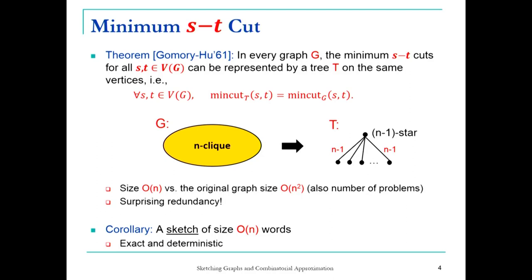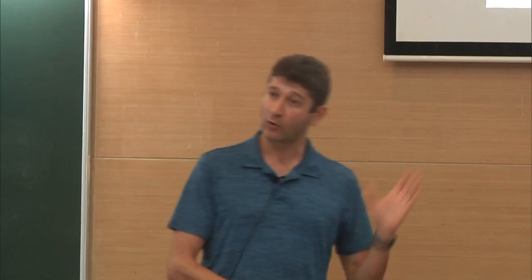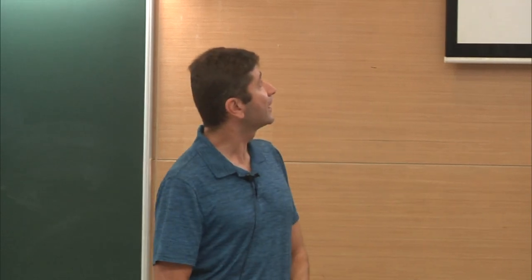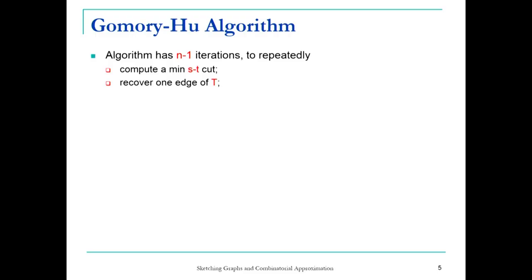For me, this is a good sketch — a good summary of the data using only order n words, and it gives you the exact value, the exact equality. I want to go to approximation, but this cannot be better since we're getting exactly the values. It's deterministic; we can also look at randomized algorithms in a few minutes. This is a wonderful result.